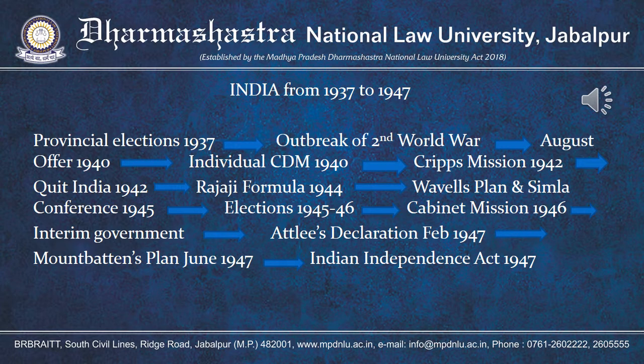As you can see in the given slide, there are a lot of events linked from the period 1937 to 1947. In the last class, we ended on the note that the Government of India Act, which was passed in 1935, provided for the provincial elections. The elections took place in 1937, and the result was that Congress was able to form its government in 7 out of 11 provinces, governing for around 28 months.